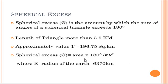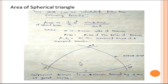However, in most triangle observations the sides are larger than this value, so the spherical excess should be taken into account. Spherical excess is approximately 1 second for every 196.75 square kilometers. Spherical excess is equal to the area multiplied by 180 degrees divided by πR², where R is the radius of the earth and area is that of the spherical triangle.